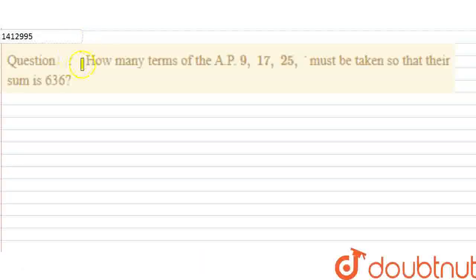Hello friends, in this question: how many terms of the AP 9, 17, 25 must be taken so that their sum is 363? We have a series given, this AP series. We have to know how many terms of the sum is 636.